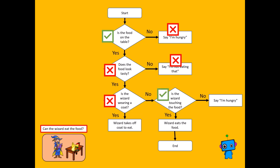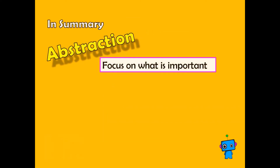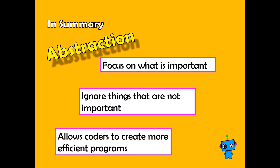It is important that the wizard is touching the food, because he can't eat it if he's not touching it. So really, this could be a very simple flowchart that just shows the important stages. In summary, abstraction is focusing on what is important and ignoring things that are not important, which allows coders to create more efficient programs.